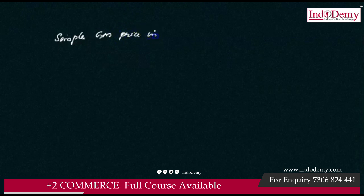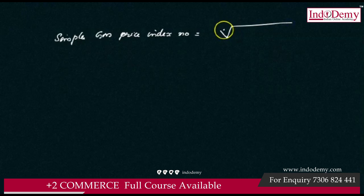This is the geometric mean price index number. The formula for geometric mean is the nth root of the product of observations, that is the nth root of x1 times x2 times ... times xn.